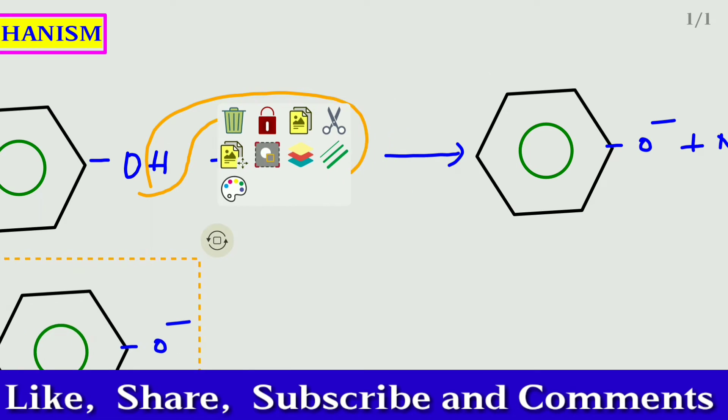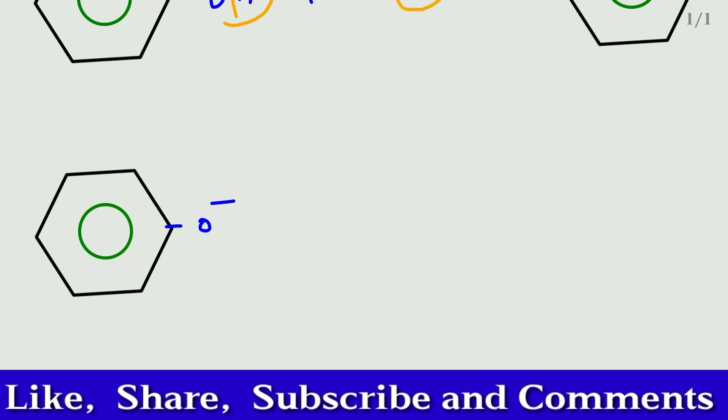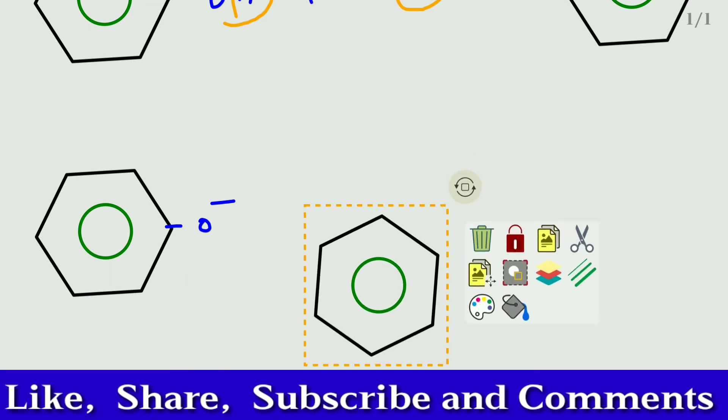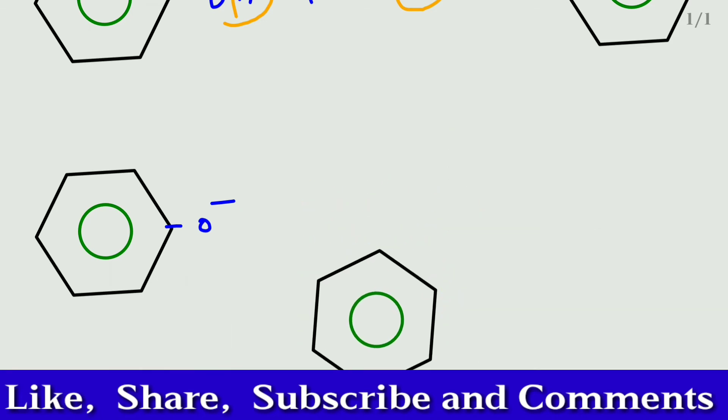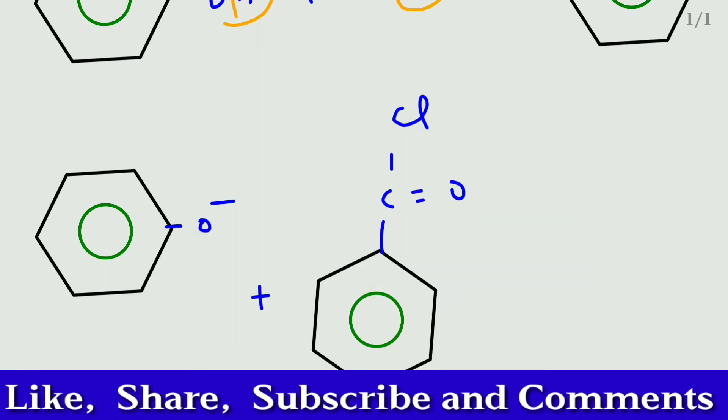So let me take the phenolate ion. This phenolate ion is treated with benzoyl chloride, C double bond O Cl. Here oxygen contains two lone pairs of electrons, it donates a pair of electrons to this carbonyl carbon. At this time what happens? The C double bond O becomes single bond.